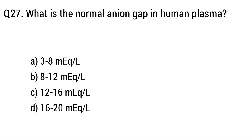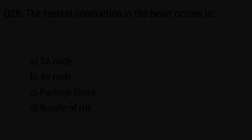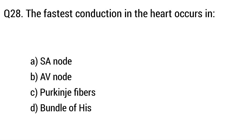Question 27. What is the normal range of immunoglobulins in human plasma? The right answer is Option B. Question 28. The fastest conduction in the heart occurs — the right answer is Option C: Purkinje fibers.